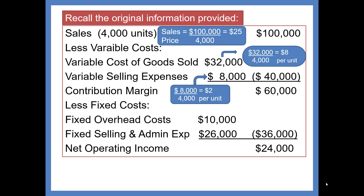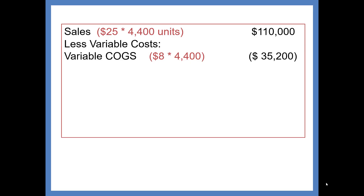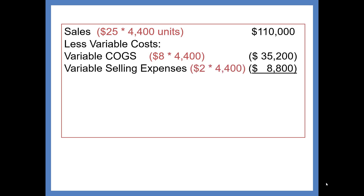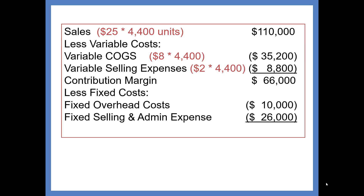Taking these numbers and recalculating: Sales are 4,400 units times $25 equals $110,000. Variable Cost of Goods Sold is 4,400 times $8 equals $35,200. Variable Selling Expenses are 4,400 times $2 equals $8,800. Contribution Margin is $66,000. Fixed costs remain at $10,000 and $26,000, so Net Income is $30,000.